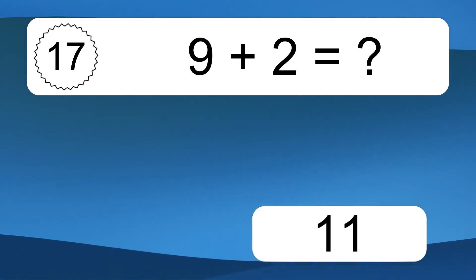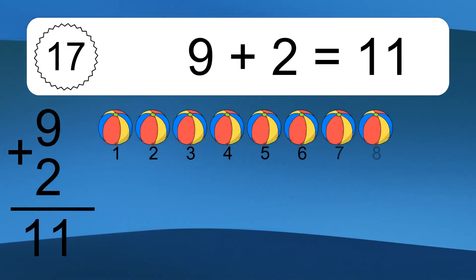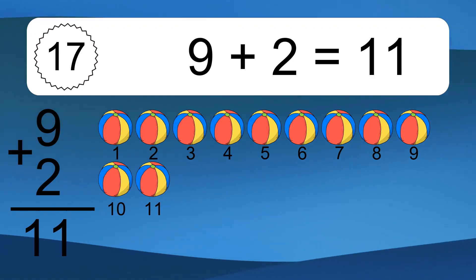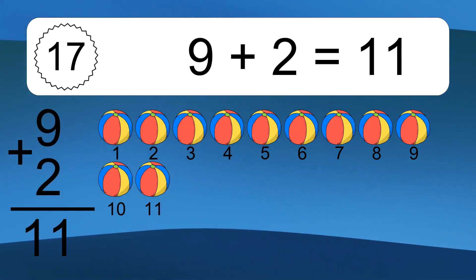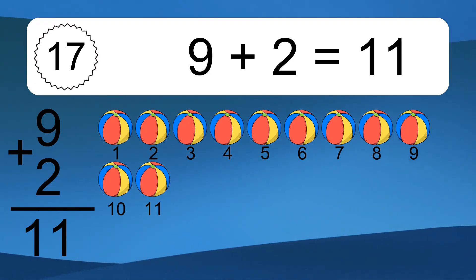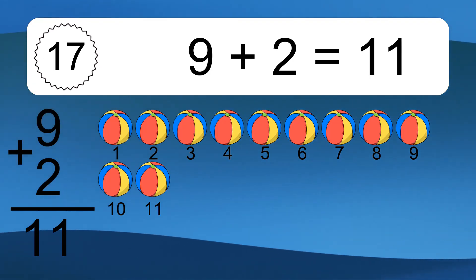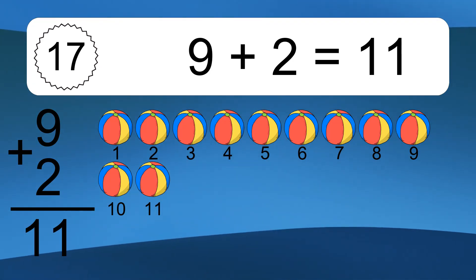9 plus 2 equals what? 9 plus 2 equals 11. Let's count it. 1, 2, 3, 4, 5, 6, 7, 8, 9, 10, 11.